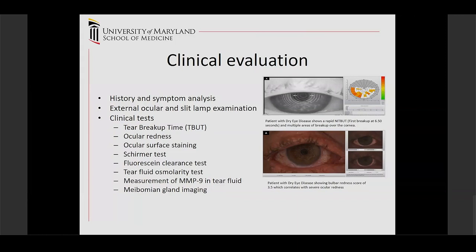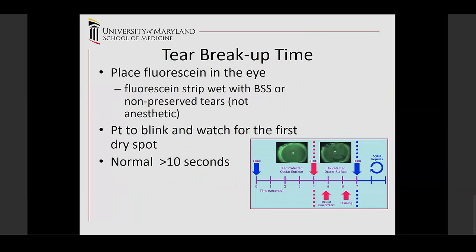For tear breakup time, you place fluorescein in the eye using a fluorescein strip — without anesthetic — then have the patient blink and evaluate for the dry spot. When the patient blinks and opens their eyes, you see diffuse green, and then you can see the breakup time where there are spots not covered by that green. Normal tear breakup time is anything greater than 10 seconds; if it's less, you would consider dry eye disease.